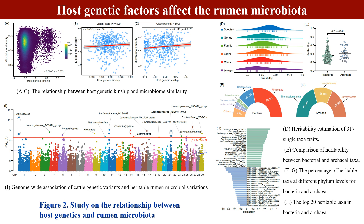We then evaluated the heritability of 317 microbial features and found approximately 70% of taxa had significant heritability. These heritable bacterial taxa — more than 50% — belong to Firmicutes. We investigated the association between genetic variants and heritable taxa abundance traits using genome-wide association study and identified 43 significant SNP-taxon associations.